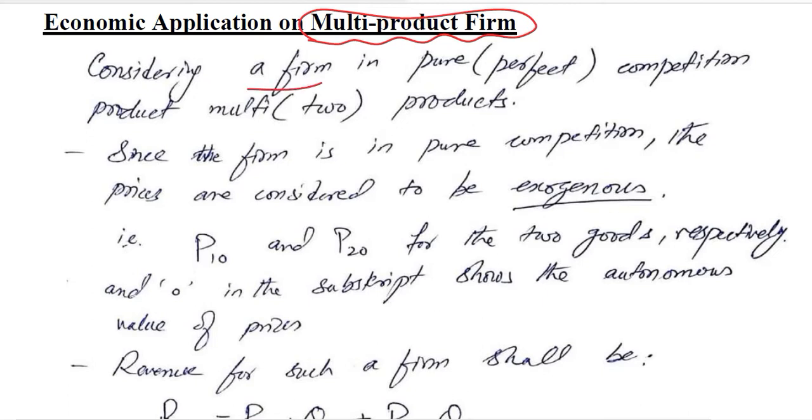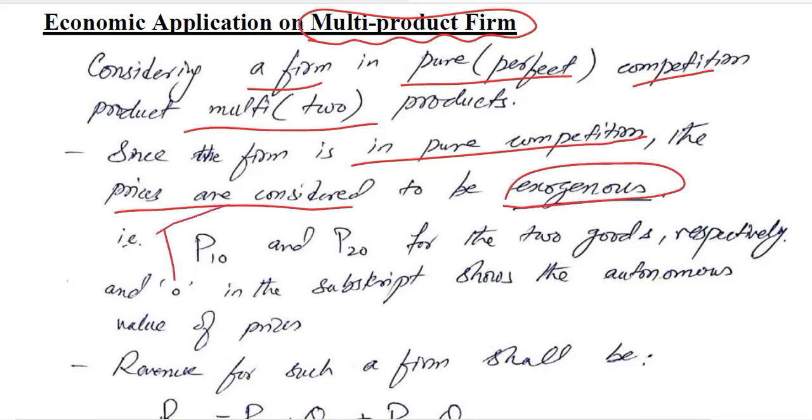We are considering a firm which is in pure or perfect competition and it is producing two goods. Since we are talking about pure competition, the prices are not controlled by the sellers and they are exogenously determined in the market. We write price first P₁⁰ and price second P₂⁰, where the nots represent that it is autonomous or exogenously determined price.